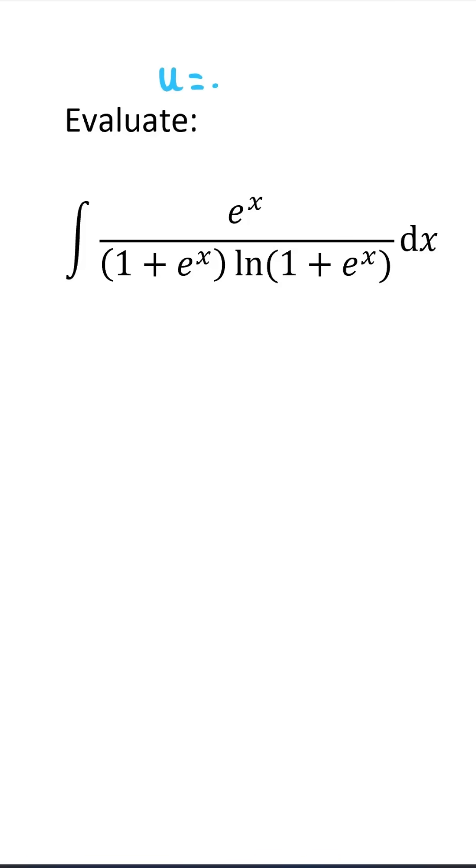The first thing we'll do is substitute u equals e to the x. This gives us that dx equals du over e to the x, or in other words, du over u.